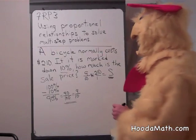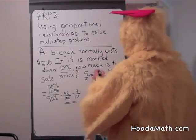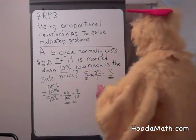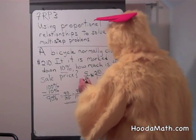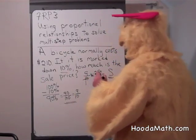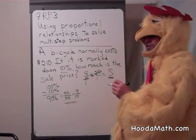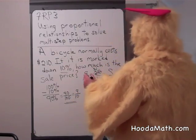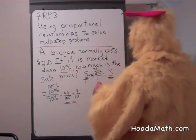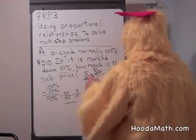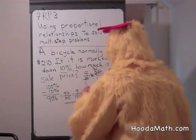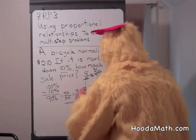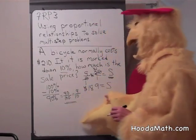Now we can multiply first and divide, or divide first and multiply. I'm going to divide first. 10 goes into 10 once; 10 into 210 is 21. Then 9 times 1 is 9, and 9 times 21 is 189. So our sale price is $189.